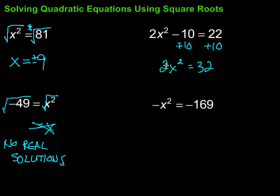Then I've got this 2 times x squared. Got to get rid of the 2. It's being multiplied there. So we're going to divide by 2. And then I'll just bring over here what I've got. So I have x squared equals 32 divided by 2 is 16.